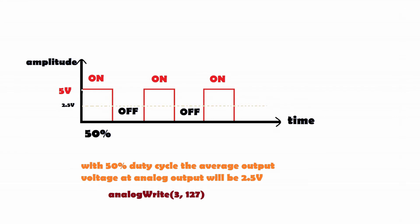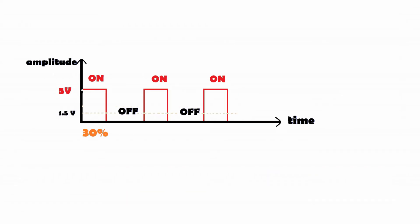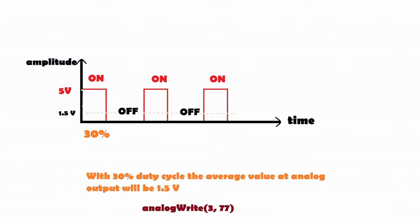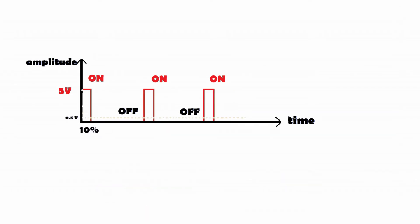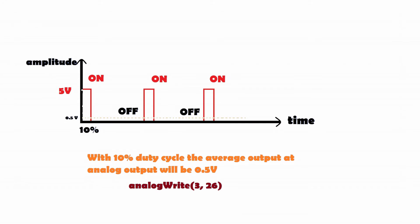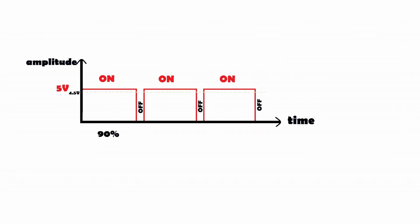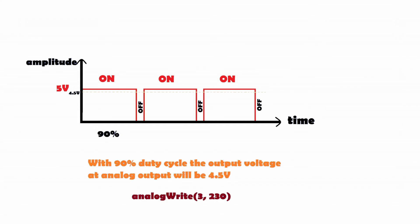For a 50% duty cycle the value to write is 127. Similarly, if we change the duty cycle to 30%, the average output voltage will be 1.5 volts, and the value to write in the instruction is 77. Reducing to 10% duty cycle gives 0.5 volts output, and increasing to 90% duty cycle gives 4.5 volts output. This is how pulse width modulation produces different average voltage levels.